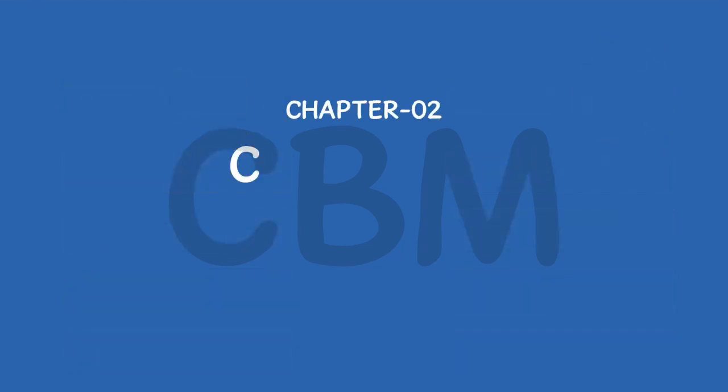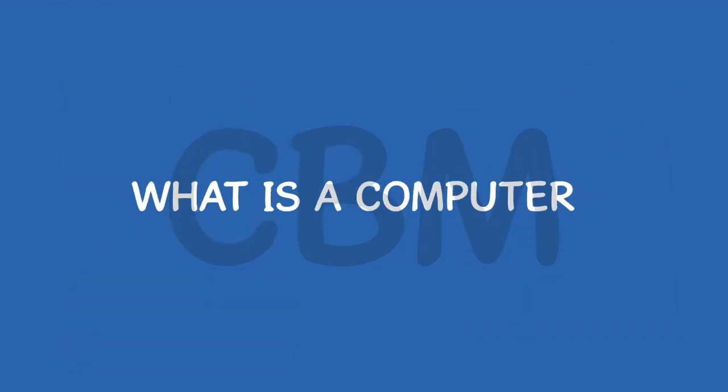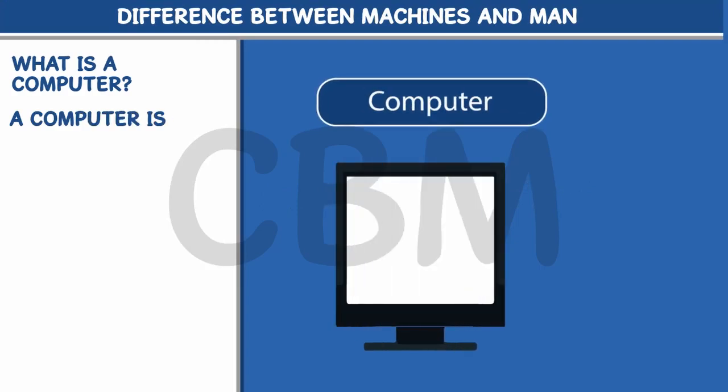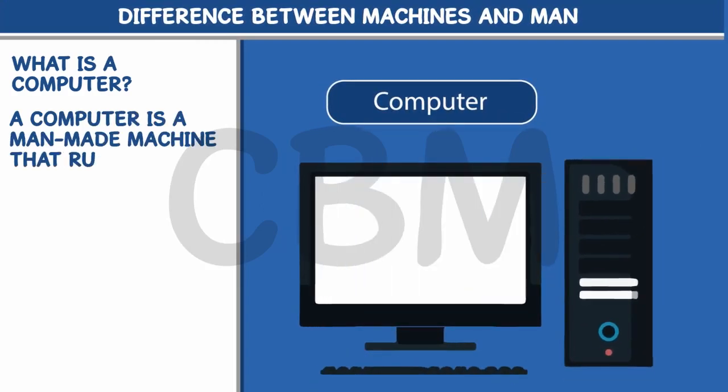Chapter 2: Computer, A Man-Made Thing. What is a computer? A computer is a man-made machine that runs on electricity.